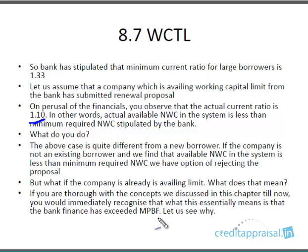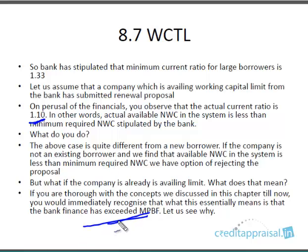If you are thorough with the concept discussed so far, what this essentially means is: if the current ratio is less than the minimum norm, it means there is some excess borrowing — bank finance has exceeded the MPBF. So there is some excess borrowing. Let us see what is going on.